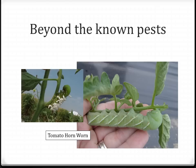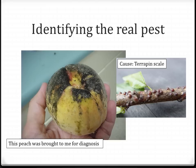An example of a common garden pest is the tomato hornworm. Maybe not so common are the white cigar-shaped structures you see in the left picture. These are actually the pupae of a beneficial parasitic wasp.